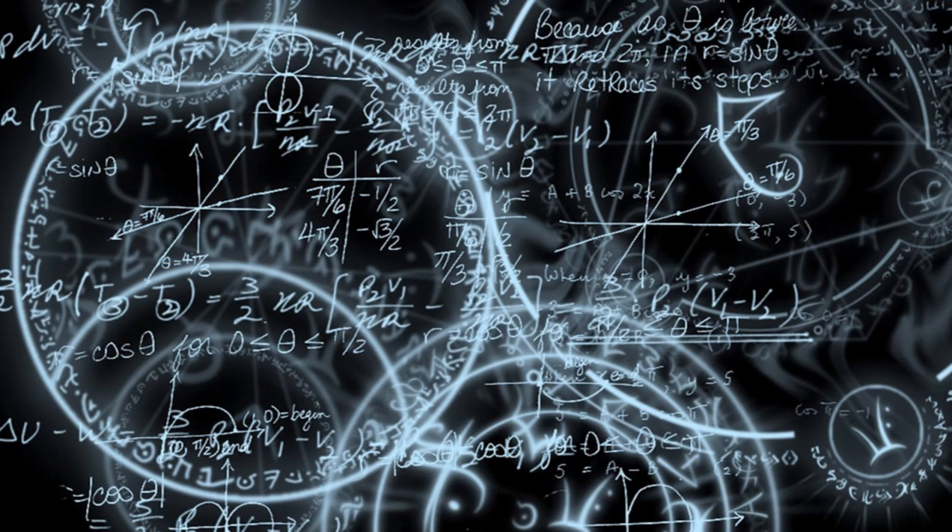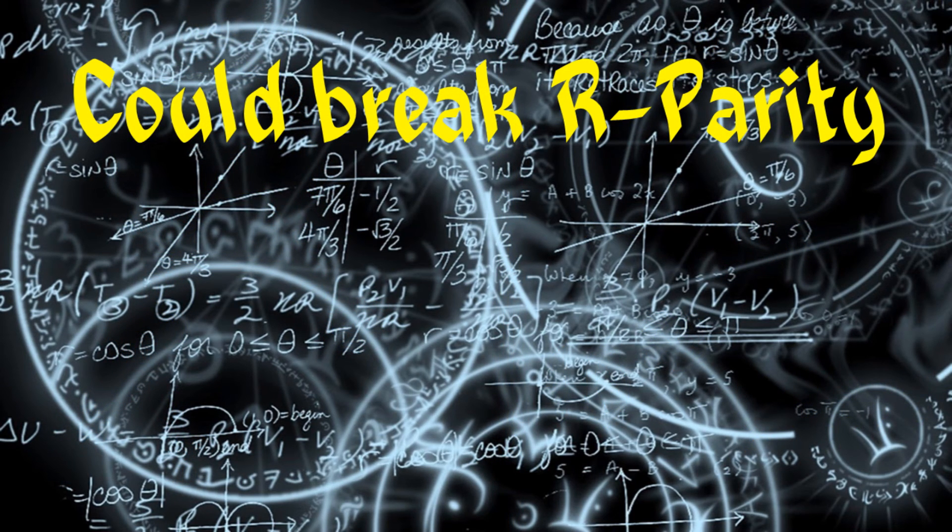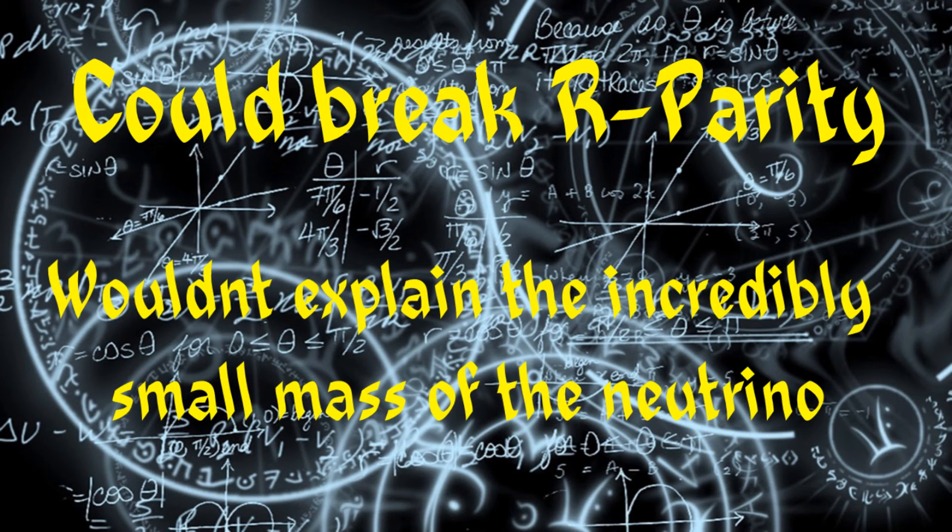In conclusion, it's possible that neutrino mass breaks the R-parity, but it's still highly unlikely, because it wouldn't explain the incredibly small mass of the neutrino.